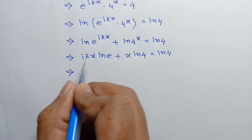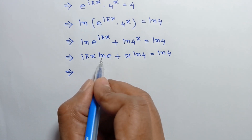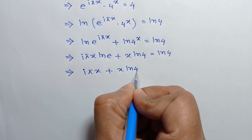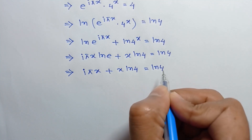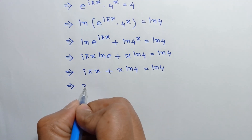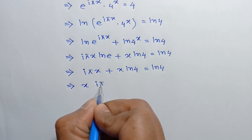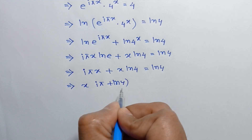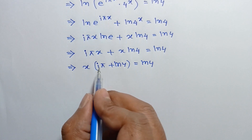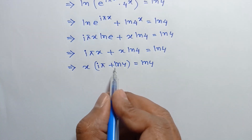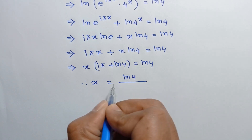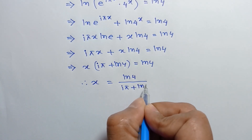The value of ln of e is 1, so it will be i pi x plus x ln 4 is equal to ln of 4. Taking x common from these two terms, we can write x times the quantity i pi plus ln of 4 is equal to ln of 4. Now dividing both sides by i pi plus ln of 4, we get x is equal to ln of 4 over i pi plus ln of 4.